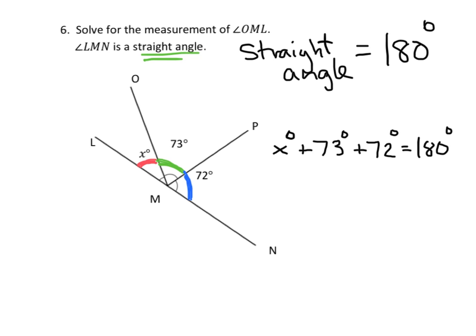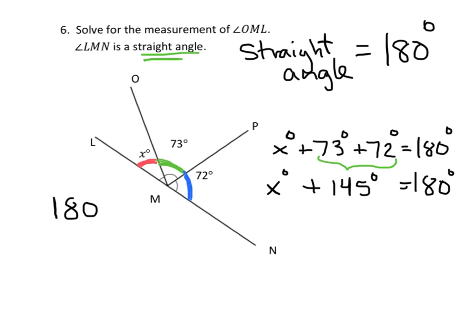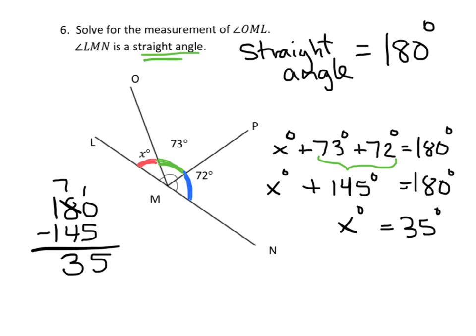So we know that x degrees plus 73 degrees plus 72 degrees equals 180 degrees. We need to figure out what x must be. Adding 73 and 72 gives us 145 degrees. So x degrees plus 145 degrees equals 180 degrees. Using subtraction on scratch paper, 180 minus 145—doing some regrouping—gives us 35. So x degrees is 35 degrees.